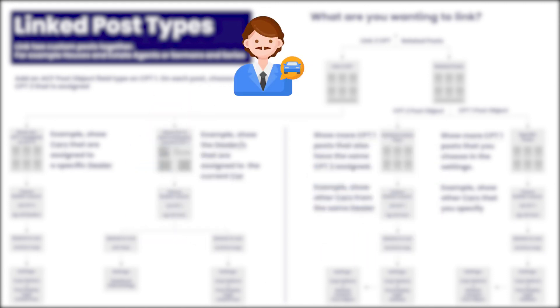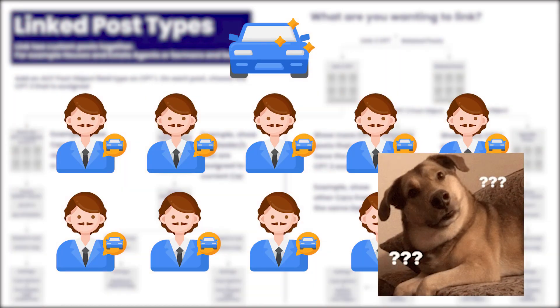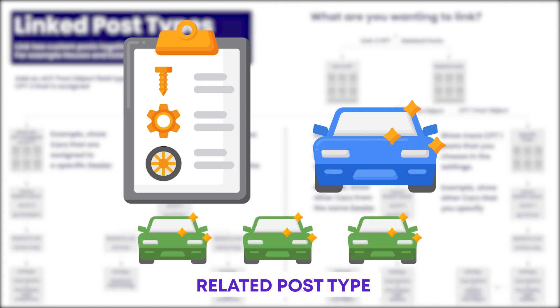Because one dealer would have many cars, but one car probably does not have many dealers. Another example of this could be when you're looking at a single car page where there is a related post type. So if I'm looking at a specific car page, the dealer might have other cars listed on the site, and those could be listed as related posts at the bottom of that page.